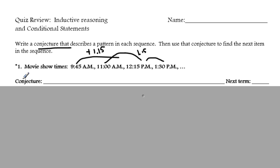So, your conjecture can be something like a new movie plays every hour and 15 minutes past the time that the previous movie started. So, your conjecture is just your conclusion based on the observations.